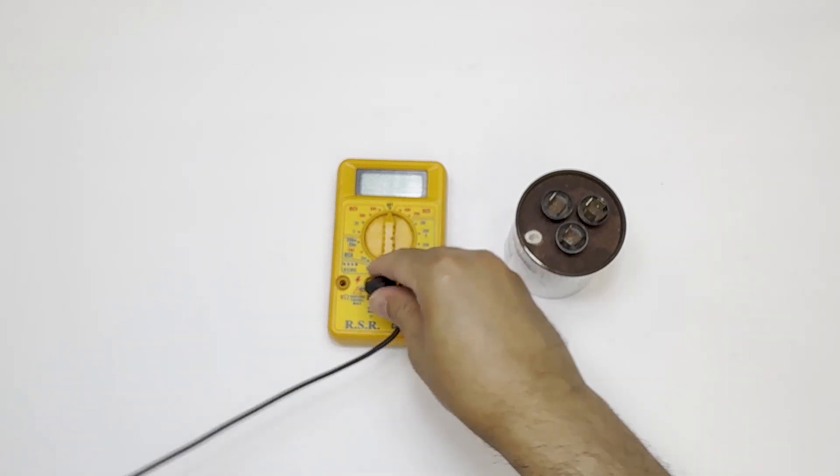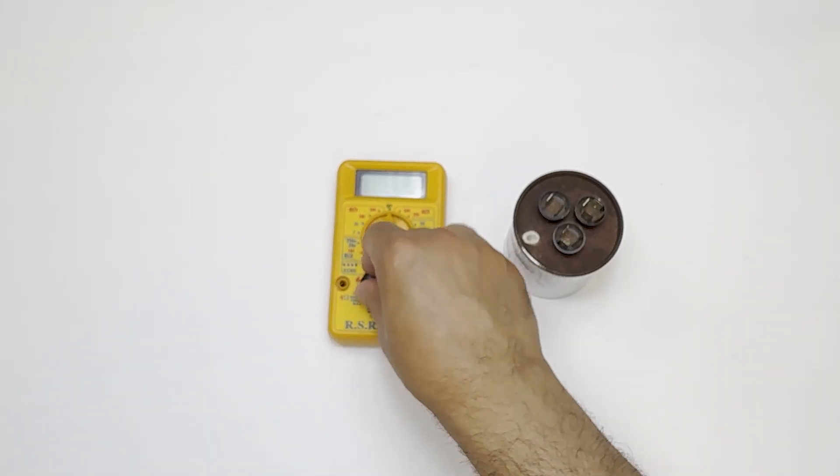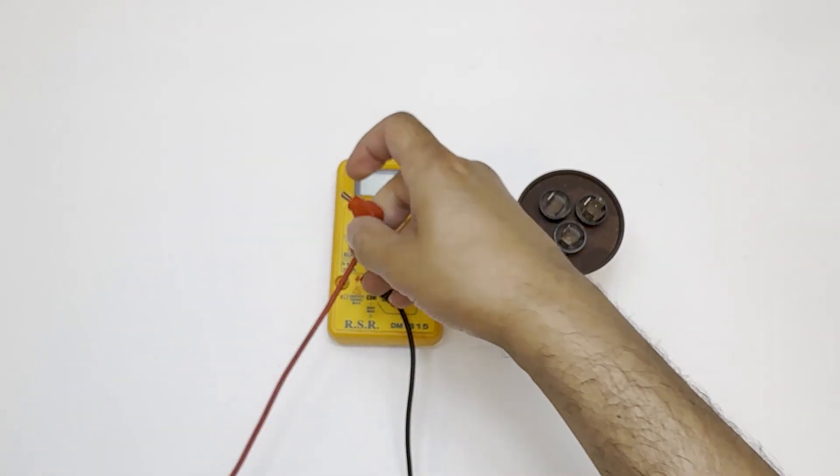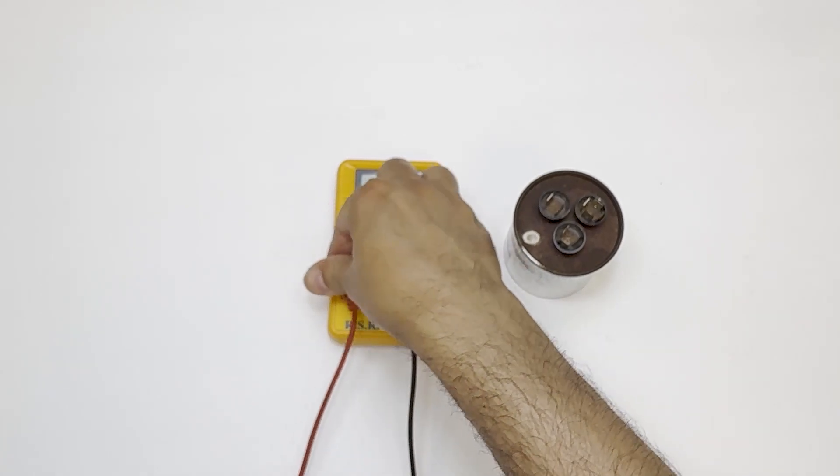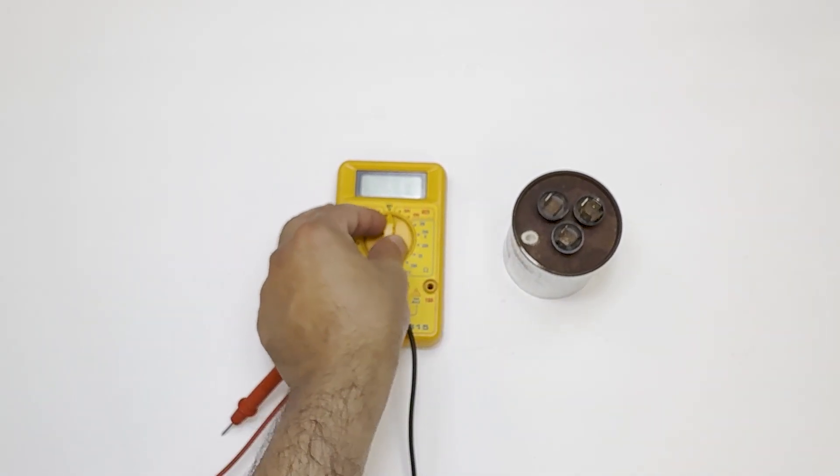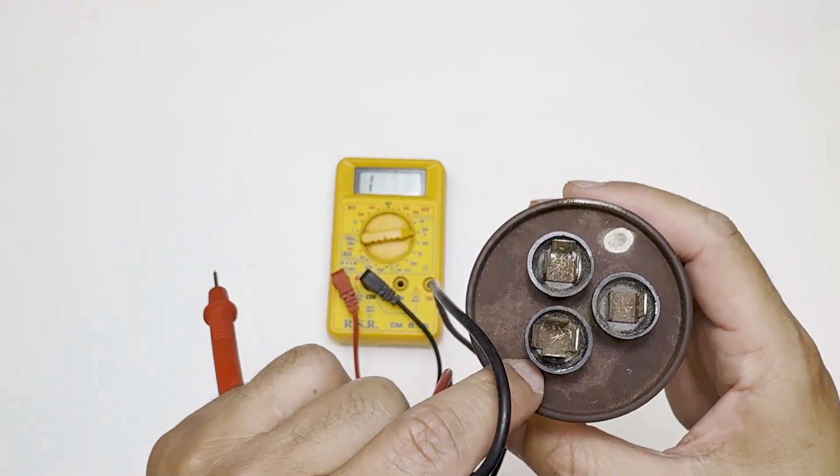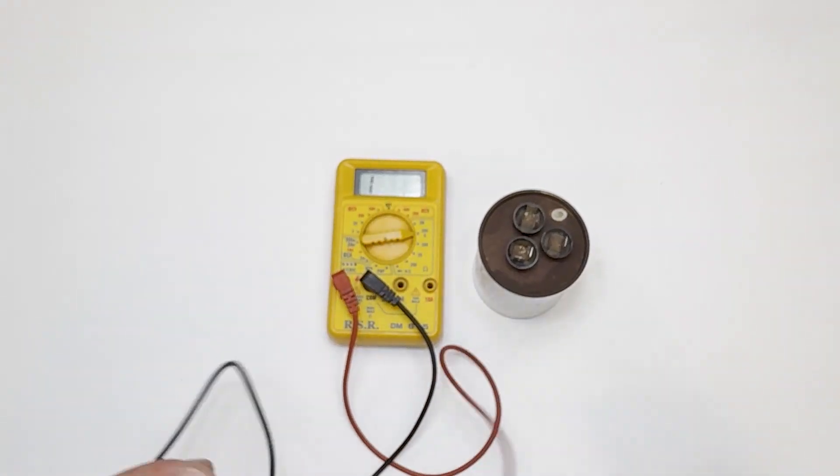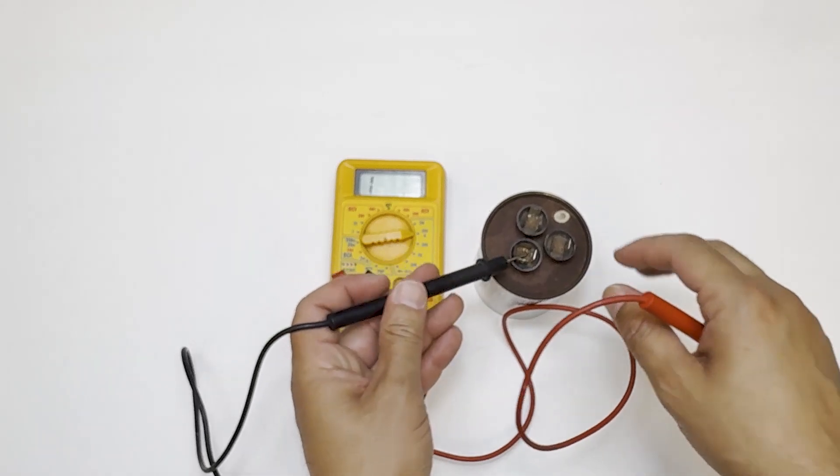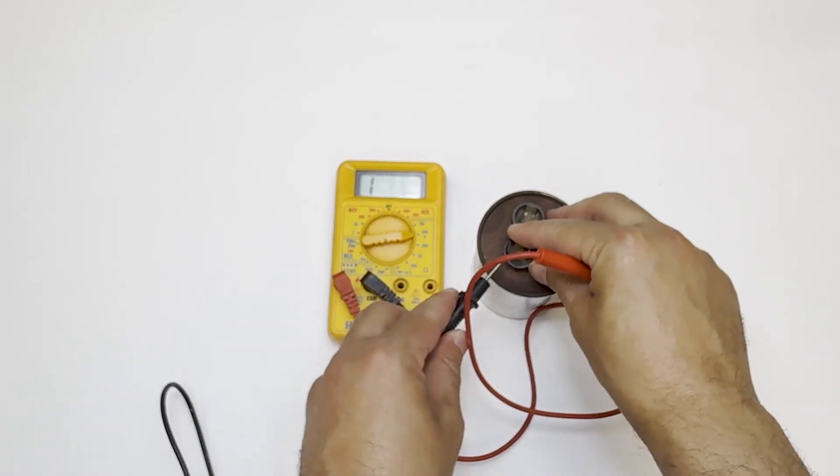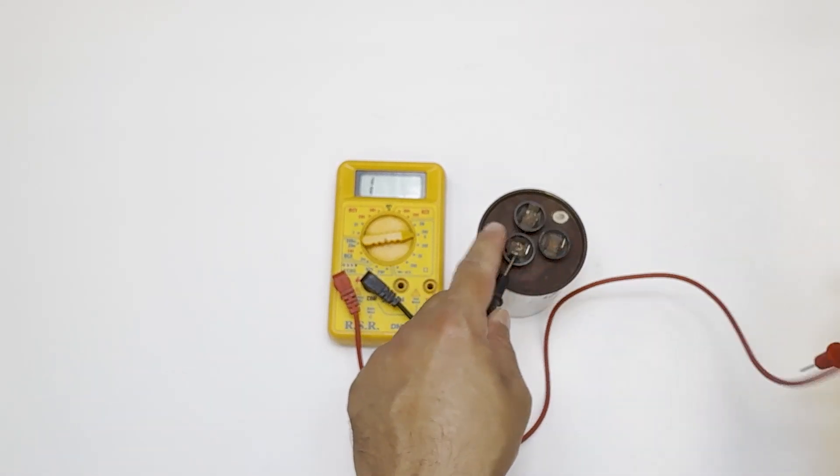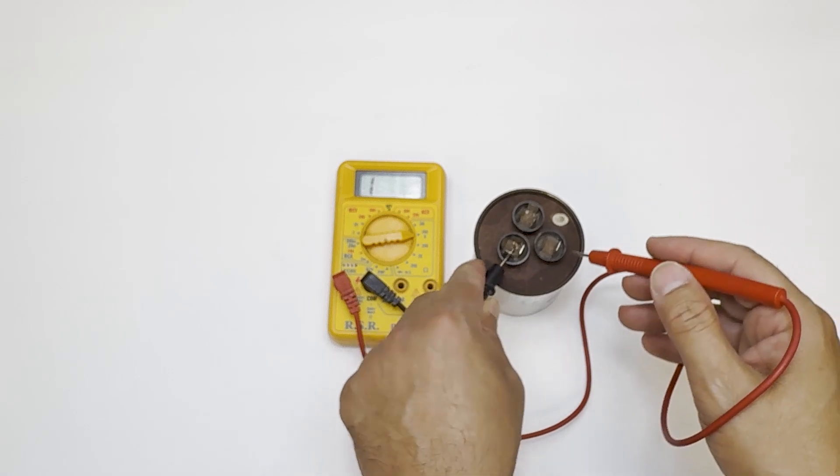Method 1: Resistance test with a basic multimeter. Step 1 would be to put the black probe to common and the red to ohms. Step 2 would be to set your multimeter to ohms. I use the 2 milli-ohm or the 200 kilo-ohm setting. Step 3: Put the black lead on the C, or common terminal, and the red line on either fan or herm. A good capacitor will make the meter jump or climb and then fall back to 1.